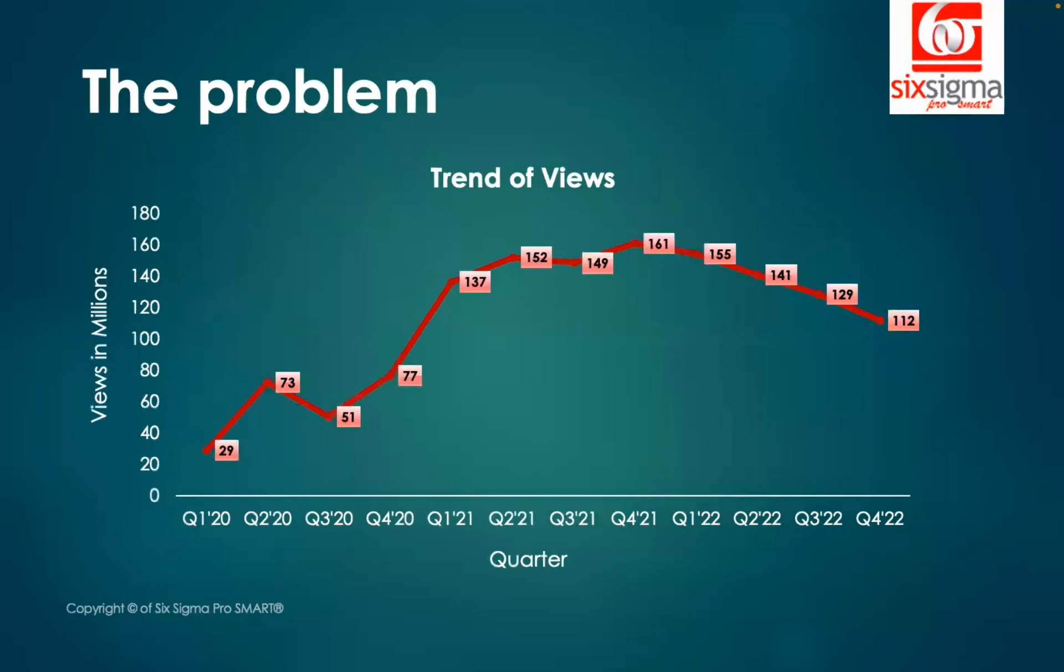Let's understand this with the help of a problem first. Let's say we have a client who is posting content on an OTT platform. The key metric for them is the average views that they get. What we see here is while the views started picking up from quarter three of calendar year 2020, and they became somewhat stagnant in calendar year 2021, we see a declining trend for calendar year 2022.